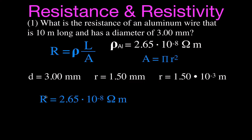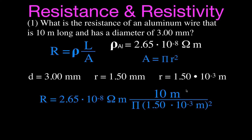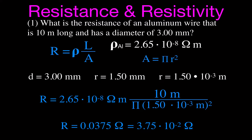R, the resistance we're solving for, equals the resistivity 2.65×10⁻⁸ ohm·meters, times the length of 10 meters, divided by pi r squared, where r is 1.5×10⁻³ meters squared. Doing the math gives 0.0375 ohms. The meters cancel — meter times meter on top, meters squared on bottom — leaving ohms, which is 3.75 times 10 to the minus 2 ohms.